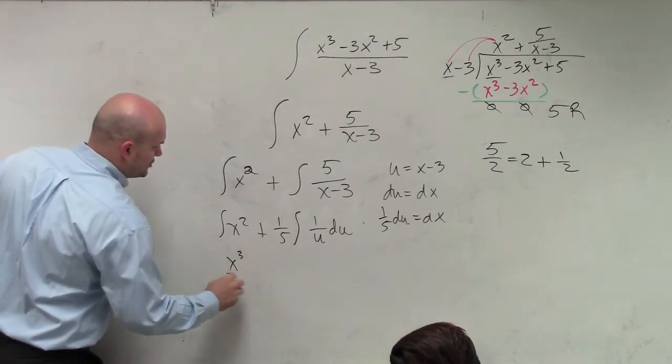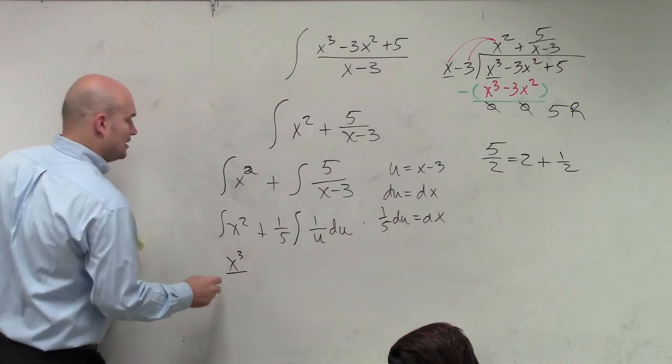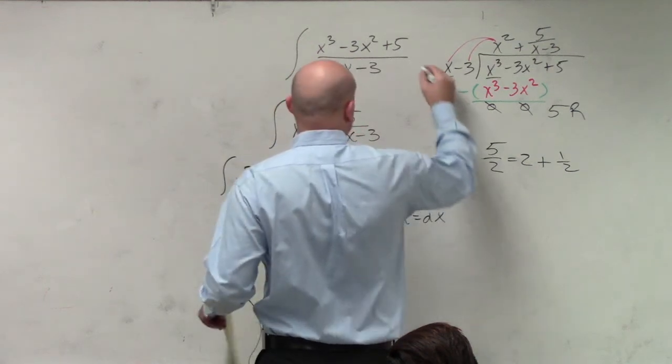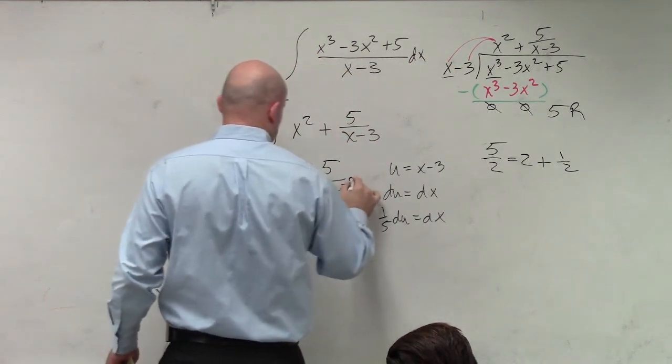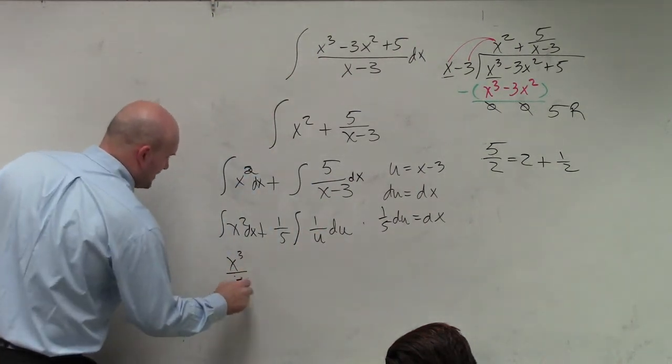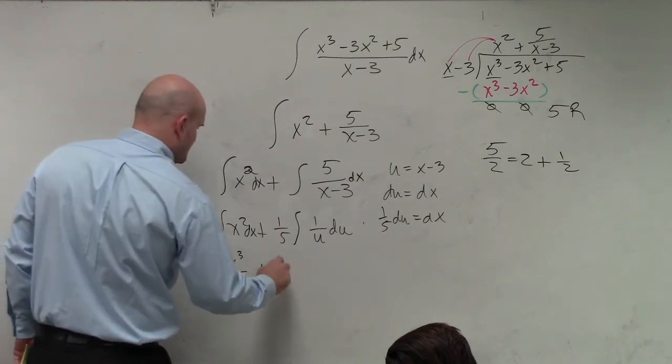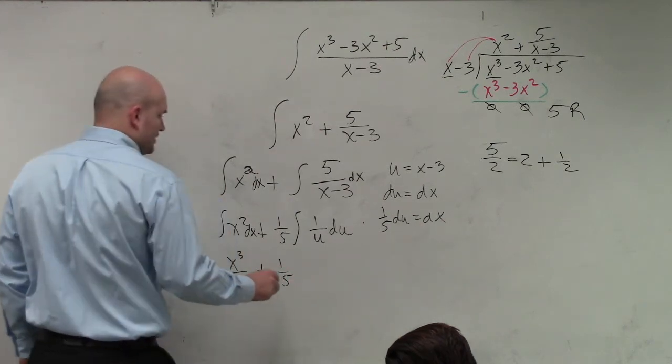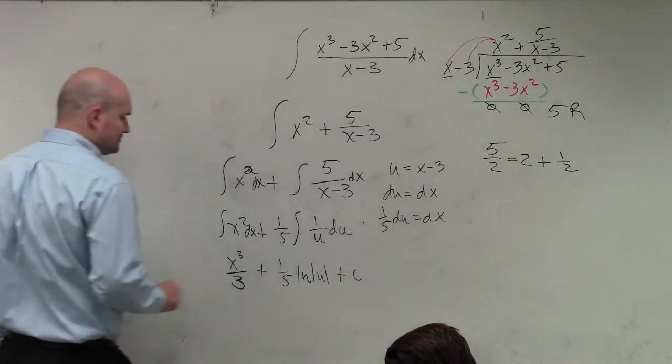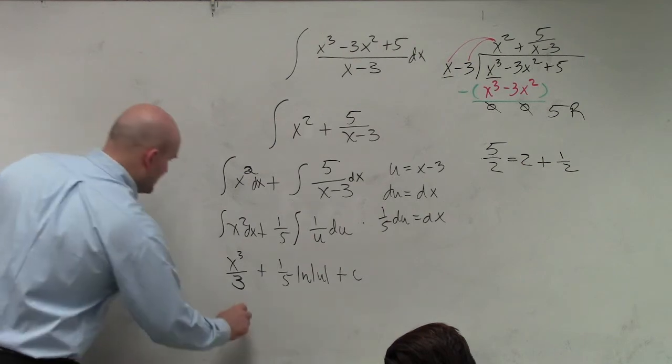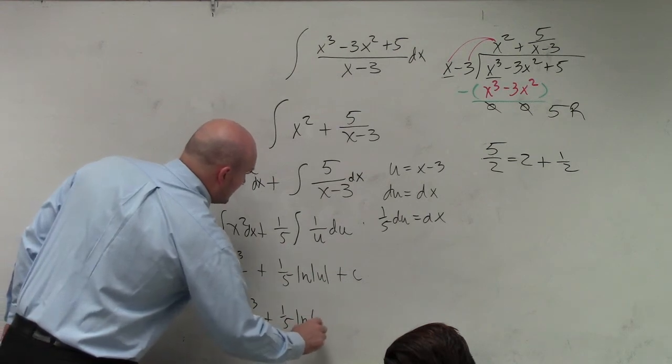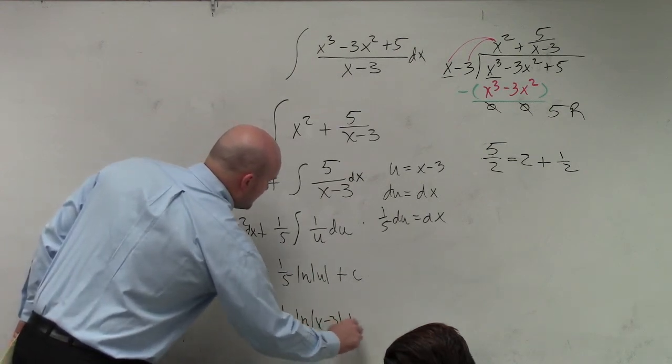Integrate x cubed over, oh, I guess I should actually make this, sorry. So x cubed over 3 plus one-fifth ln of u. And then this is all plus a c. And then I'm just going to plug in back in my u. So I have x cubed over 3 plus one-fifth ln of x minus 3 plus c.